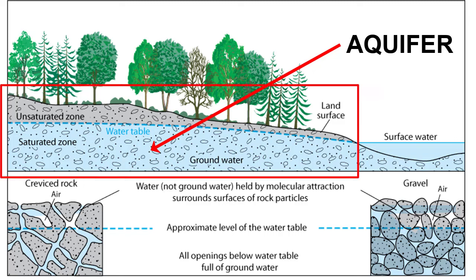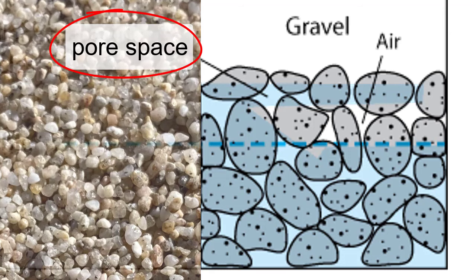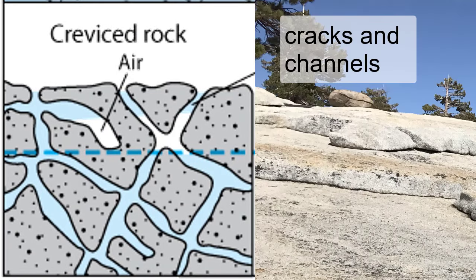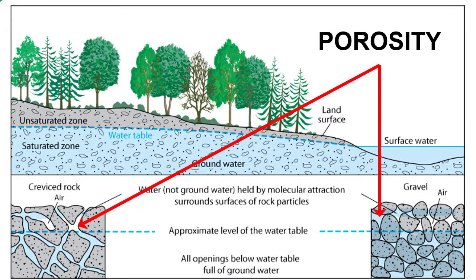Under Earth's surface there are rocks, and atop those rocks are soils. Some of those rocks and soils are made of gravels and sand grains with empty spaces called pore spaces between the grains. Some rocks are made of intergrown crystals with no pore spaces — these rocks may have open cracks or dissolved channels within them. Whether pore spaces or cracks and channels, the amount of open space in rocks available for air or water to fill is called its porosity.